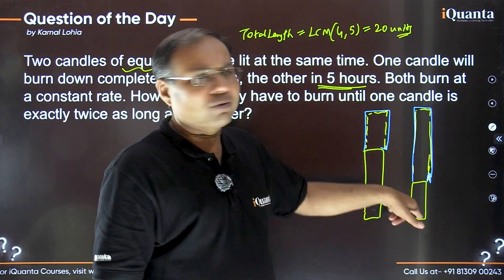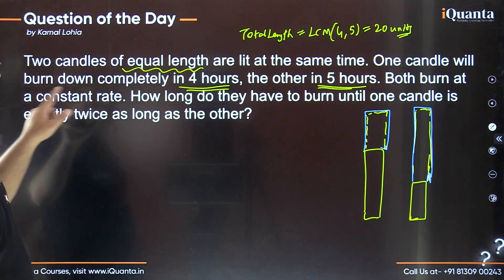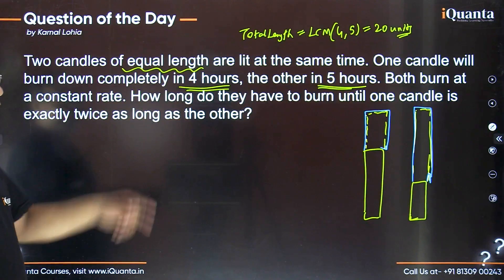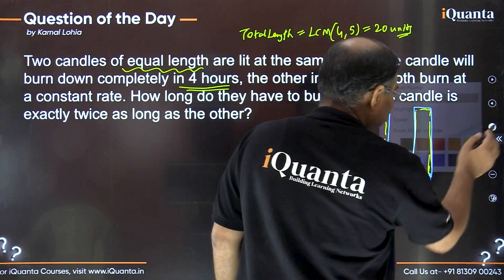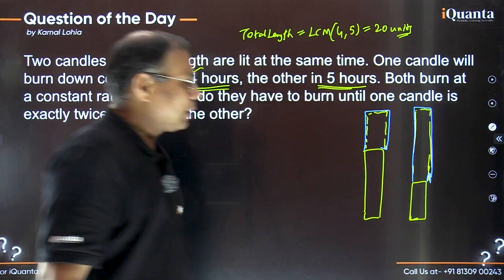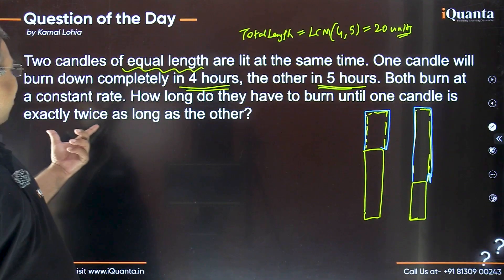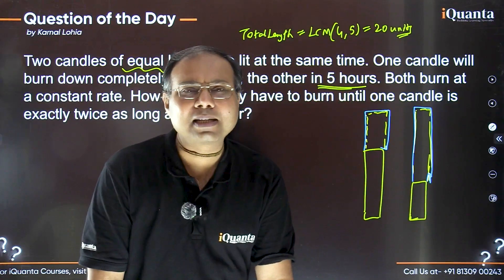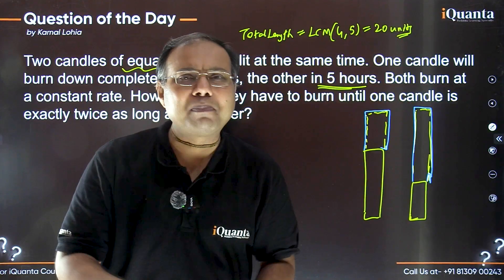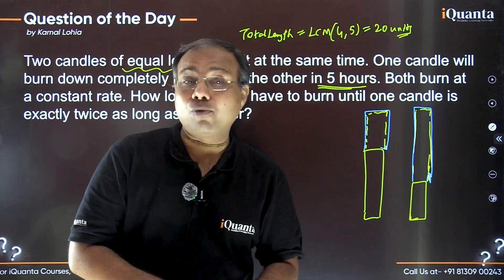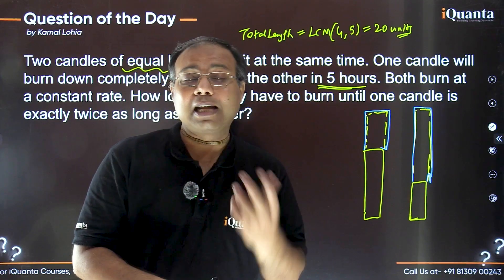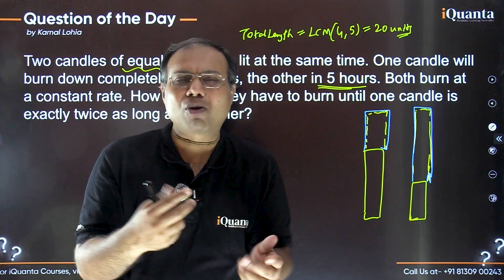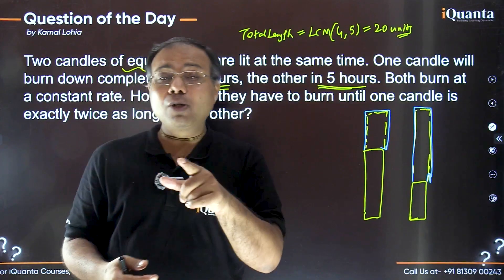The question says both candles burn at a constant rate — how long do they have to burn until one candle is exactly twice as long as the other? This is the situation illustrated in our diagram. For some students this becomes time-consuming and confusing, since only timings are mentioned and nothing else, but as mentioned, it is just like a time and work problem.